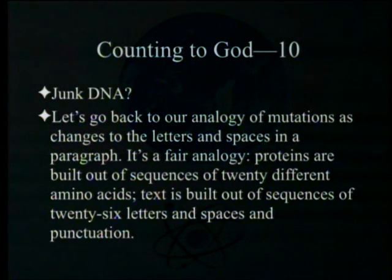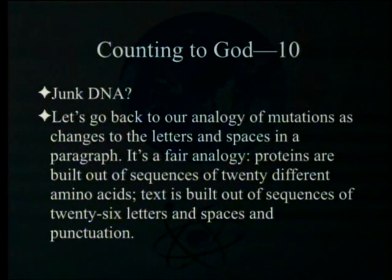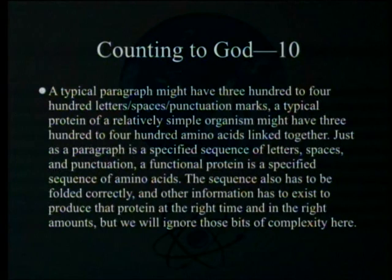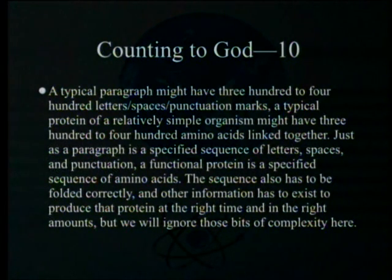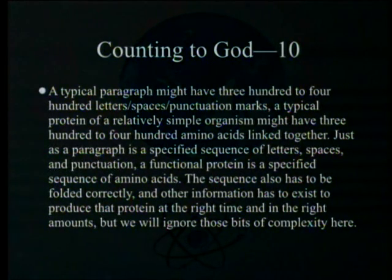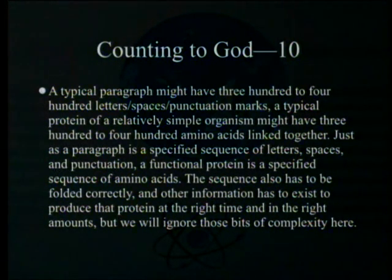Let's go back to our analogy of mutations as changes to letters and spaces in a paragraph. Proteins are built out of sequences of 20 different amino acids; text is built out of sequences of 26 letters, spaces, and punctuation. A typical paragraph might have 300 to 400 characters, and a typical protein of a simple organism might have 300 to 400 amino acids. A functional protein is a specified sequence of amino acids that must also be folded correctly.